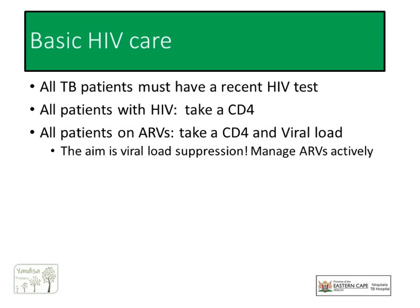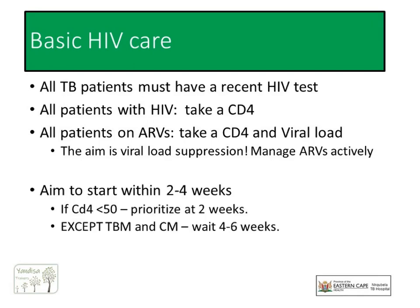It is essential to ensure that our patients achieve viral suppression. The guideline gives leeway to start ARVs between 2 to 8 weeks for patients who have a CD4 over 50, but in practice we try to initiate patients within 2 to 4 weeks of starting TB treatment, prioritising those with a low CD4 count. The only exception, as always, is TB meningitis and cryptococcal meningitis, where we wait at least 4 to 6 weeks before initiating ARVs to reduce the risk of a serious IRIS.